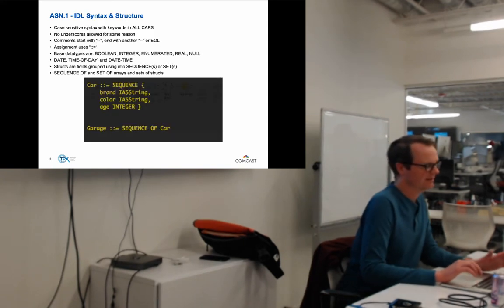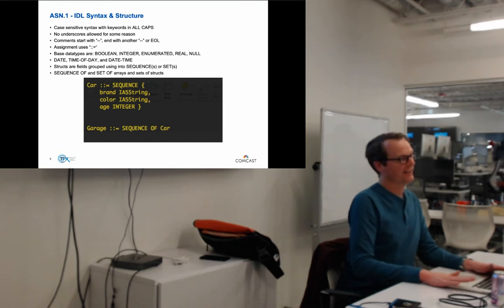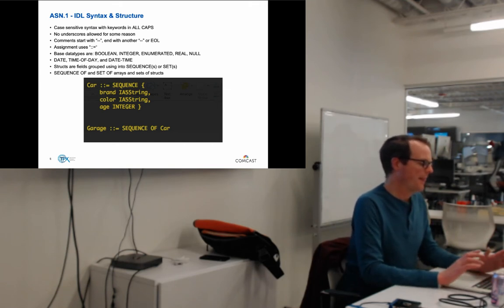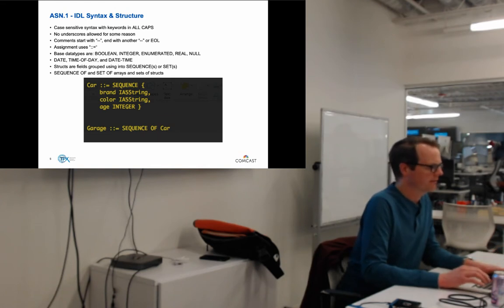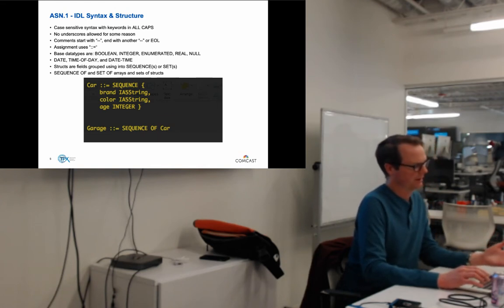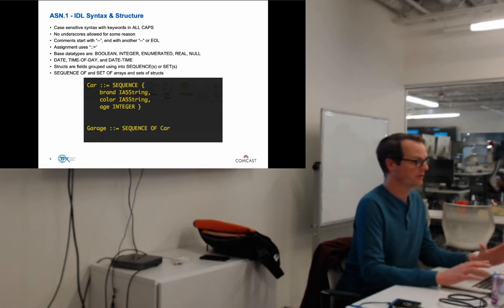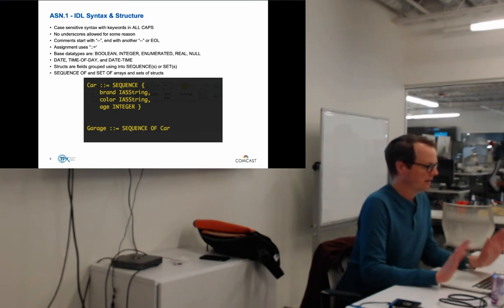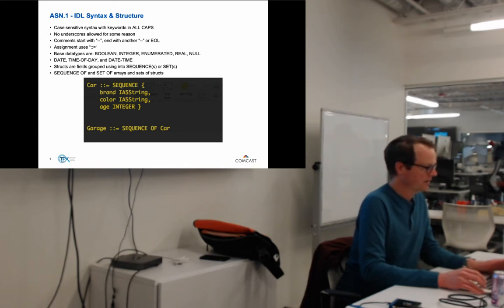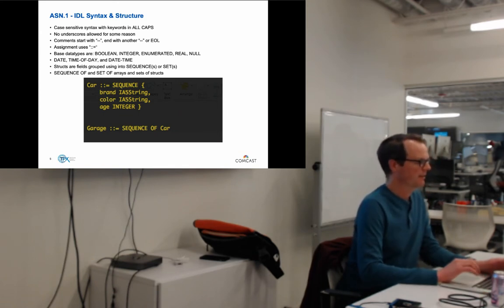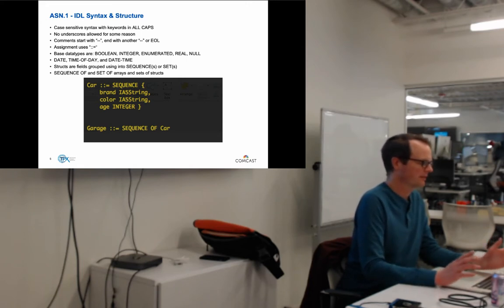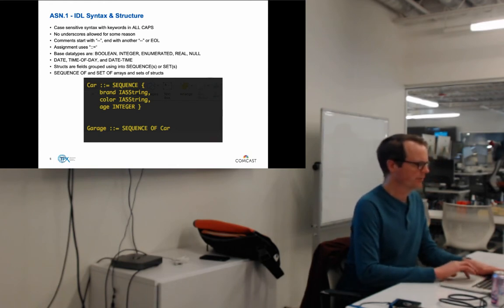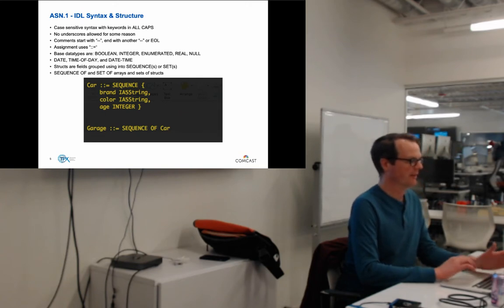Getting into the structure: you have to define your IDL and then compile it, and then your Go program can read it. There's no Go stub generator or IDL compiler for ASN.1. Keywords are all caps. The assignment is Go-like with a colon, except it's double-colon-equals instead of single colon-equals.